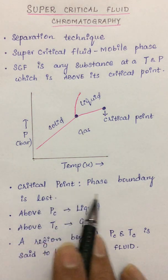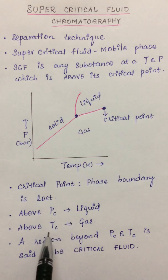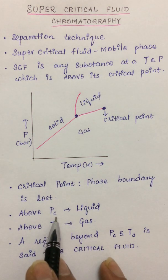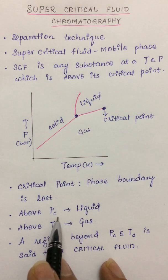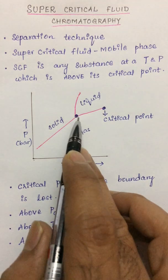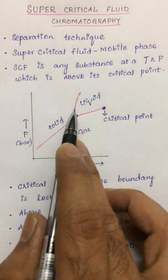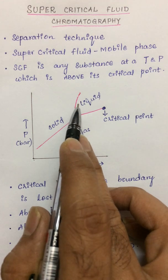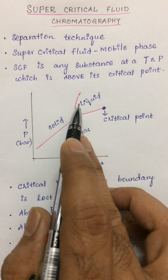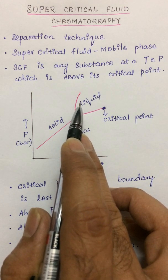So at critical pressure indicated by Pc, as the pressure is raised, we can see the gas phase cannot exist. So beyond critical pressure, a compound can exist only as a liquid.